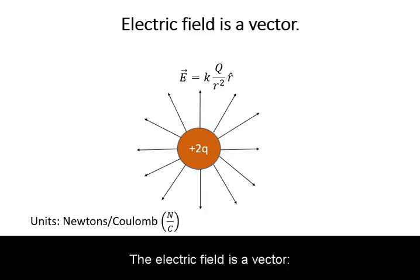The electric field is a vector. Its magnitude is given by the coulomb constant times the charge divided by the distance from it squared. It has units of newtons per coulomb. And the direction is away from positive charges and towards negative charges.